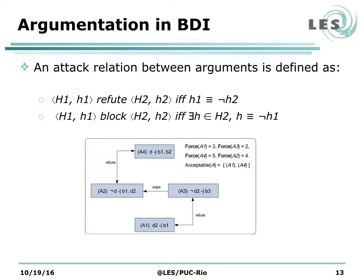In this figure, we are supposing a general concept of force, which may represent the strength or validity of arguments. In this case, since the force of argument 4 is bigger than the force of argument 2, argument 4 would win. Now, if we have some formula in the body of the second argument which represents the negation of the conclusion of the first argument, we have an attack relation of the block type. This is shown between arguments 2 and 3, where d2 in the body of argument 2 is the negation of the conclusion of argument 3. Since the force of 2 is bigger than the force of 3, argument 2 would win.